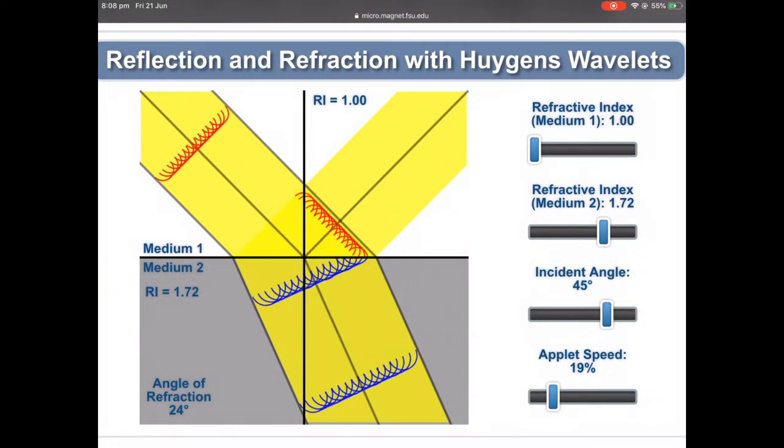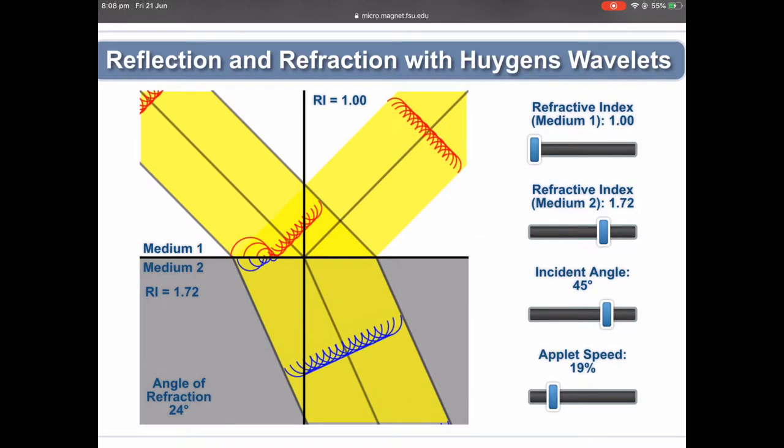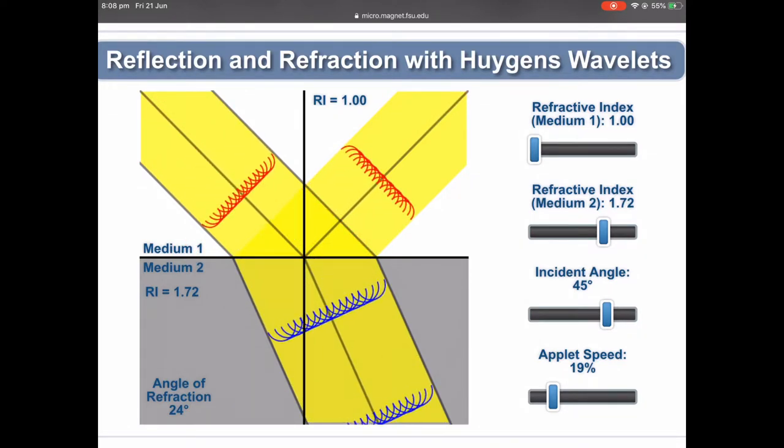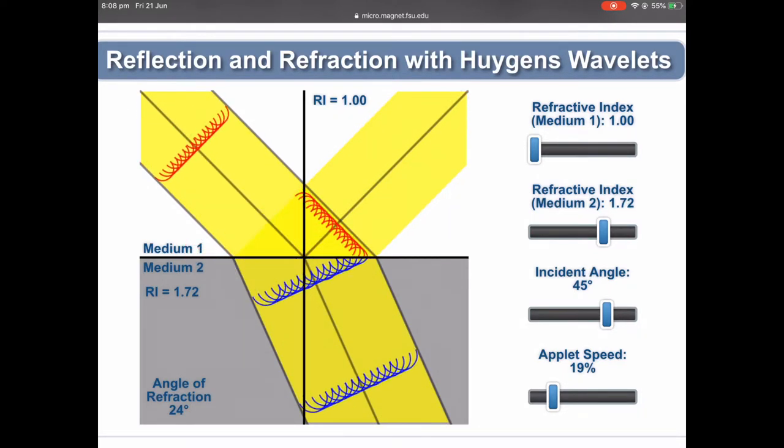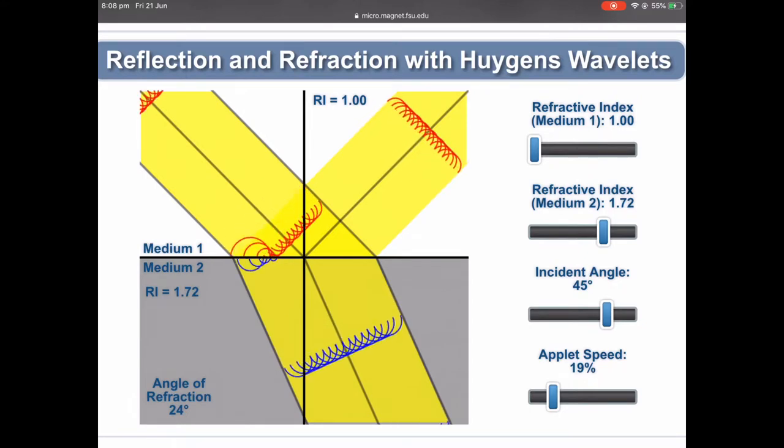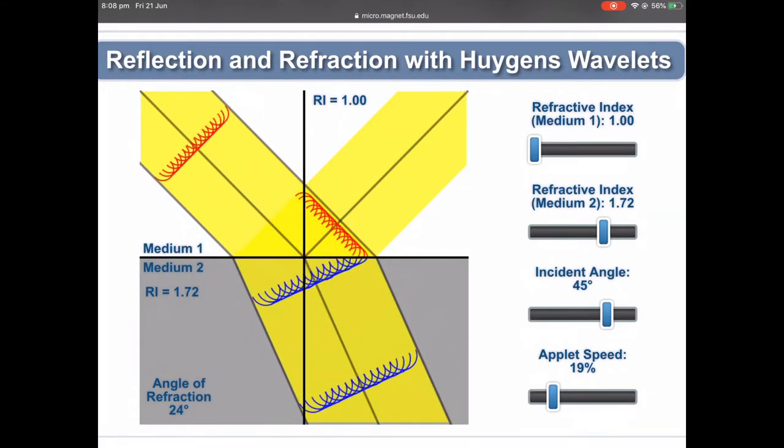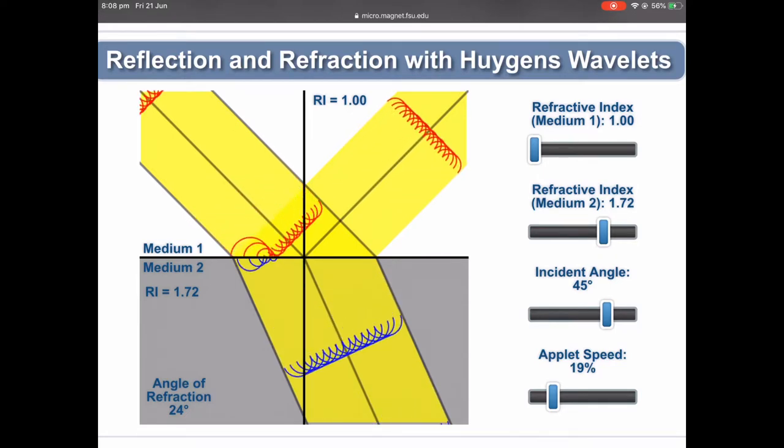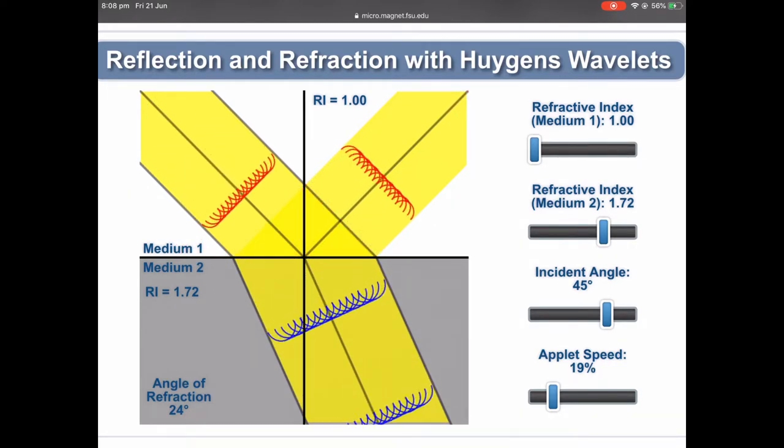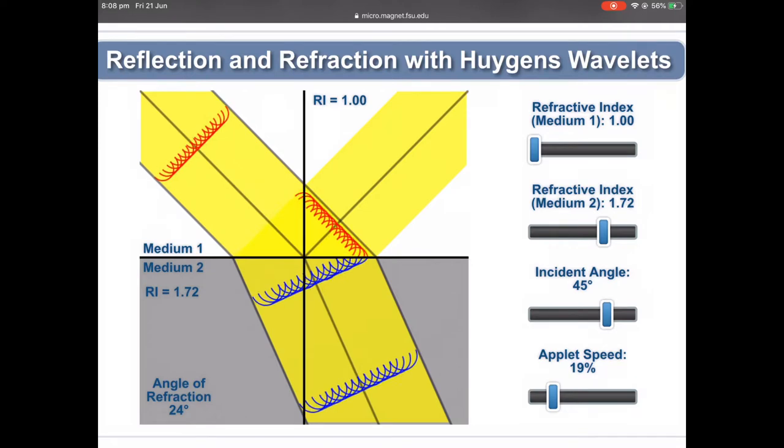Reflection can also be explained using the concept of wavelets. As seen in the tutorial, when the wavelets are reflected, they do not change speed, since there is no change in refractive index. Instead, when the wavelets impact the surface of the second medium, they are reflected according to their incident angles.